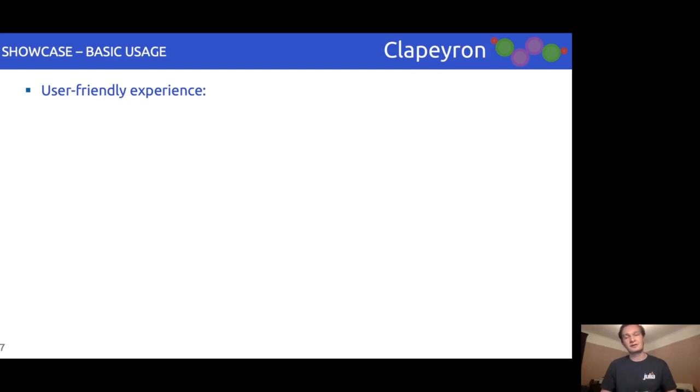We will now showcase some of the features of Clapeyron. The primary purpose of Clapeyron is to provide a toolbox with which one can use equations of state to model any fluid system. In terms of utilization, since most of those in the field are not usually coding experts, we've kept the user interface as simple as possible.